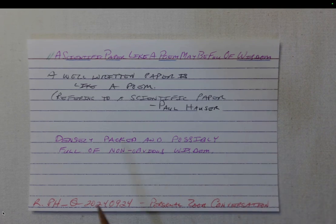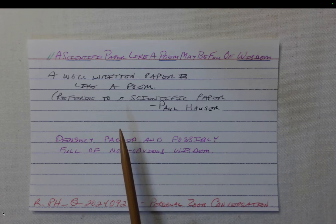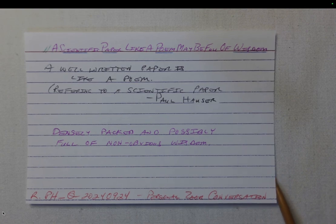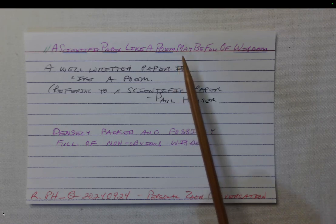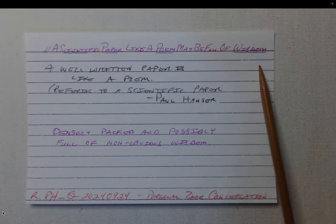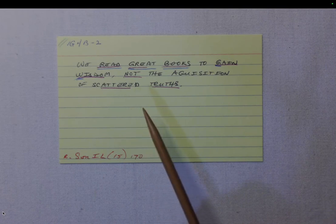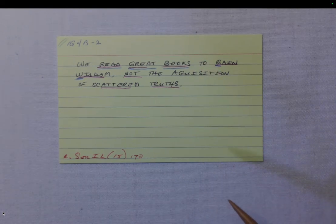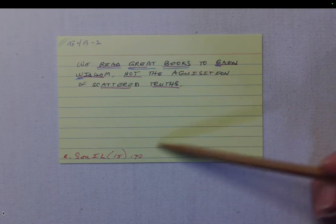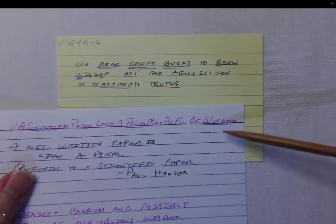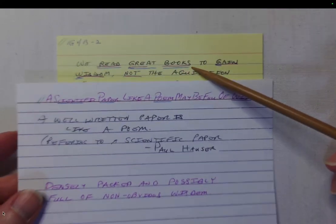I didn't have anything specifically talking about scientific papers in my Zettelkasten, and even though I'm a fiction writer and not a poet, I didn't have anything on poetry either. So I focused on the idea of wisdom and found this card — a bit of a stretch — that says we read great books to gain wisdom, not for the acquisition of scattered truths. It's a tenuous connection, but both cards tie to the idea of reading to gain wisdom.